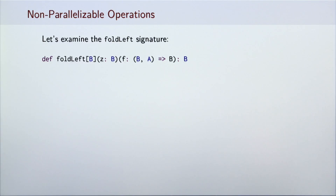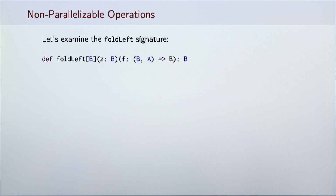Method foldLeft says: give me a collection with n elements of type A, any number of neutral elements, and any number of instances of the function f. I will connect the elements of the collection together using the function f. In how many ways can foldLeft do that?